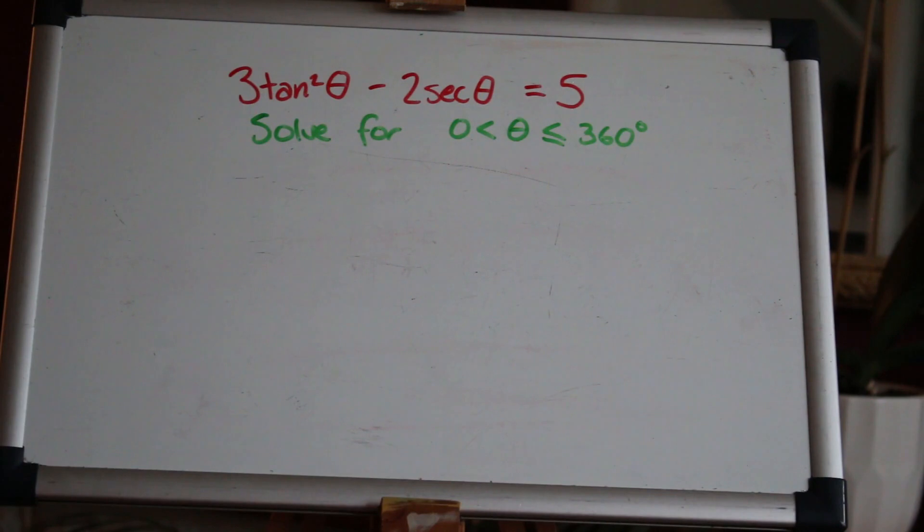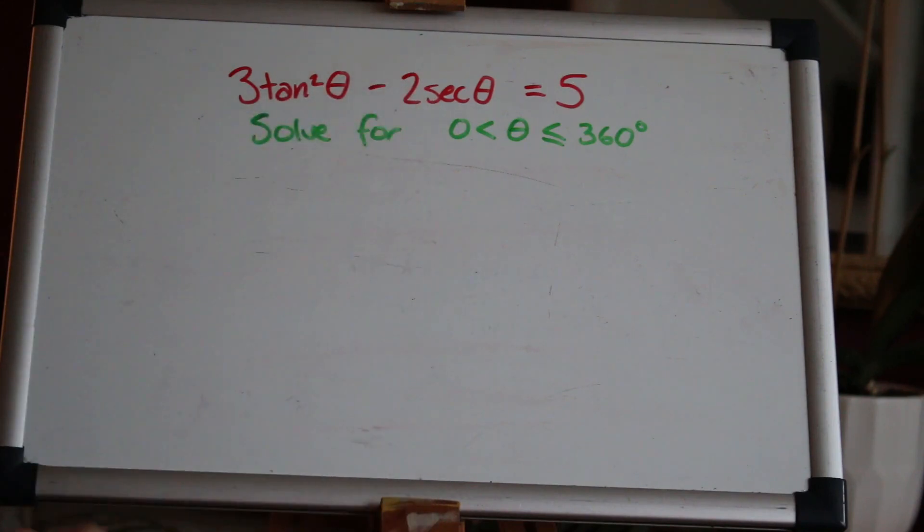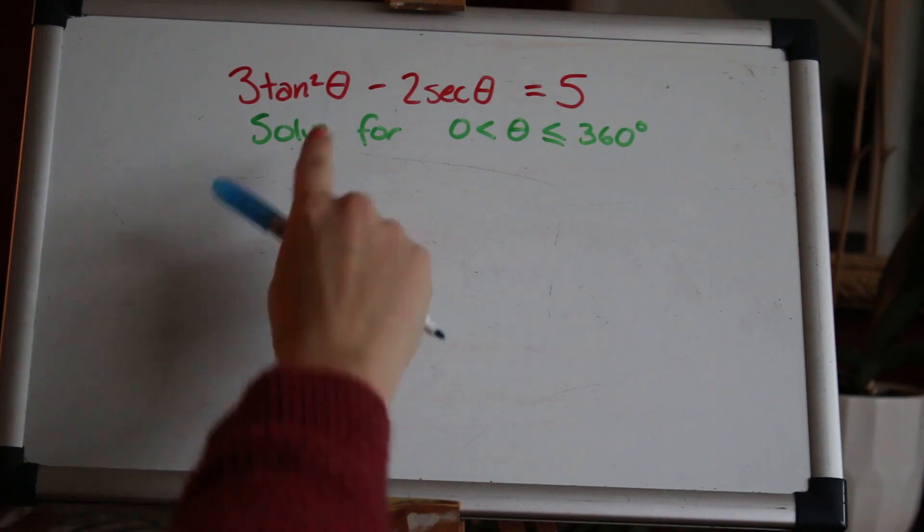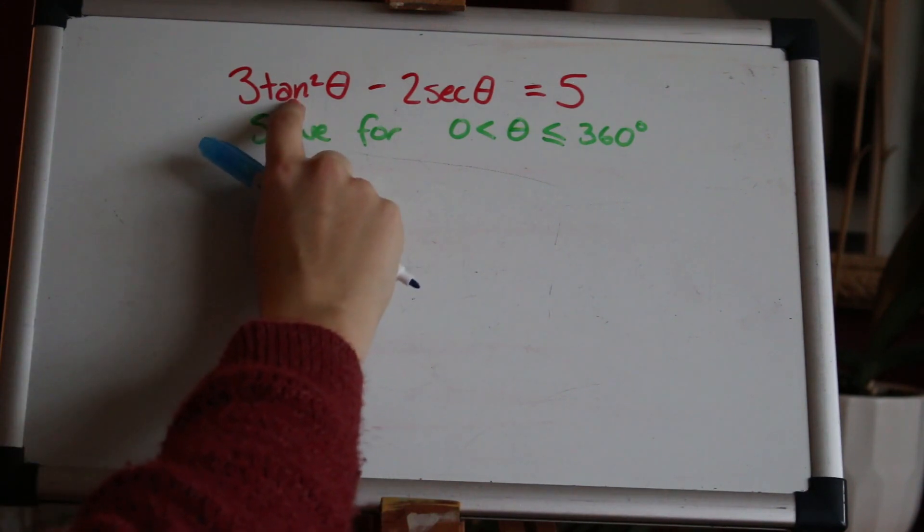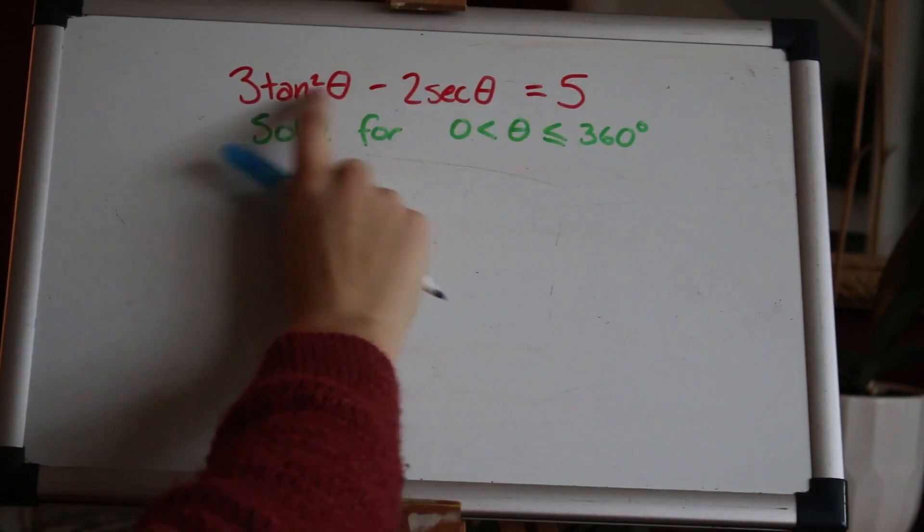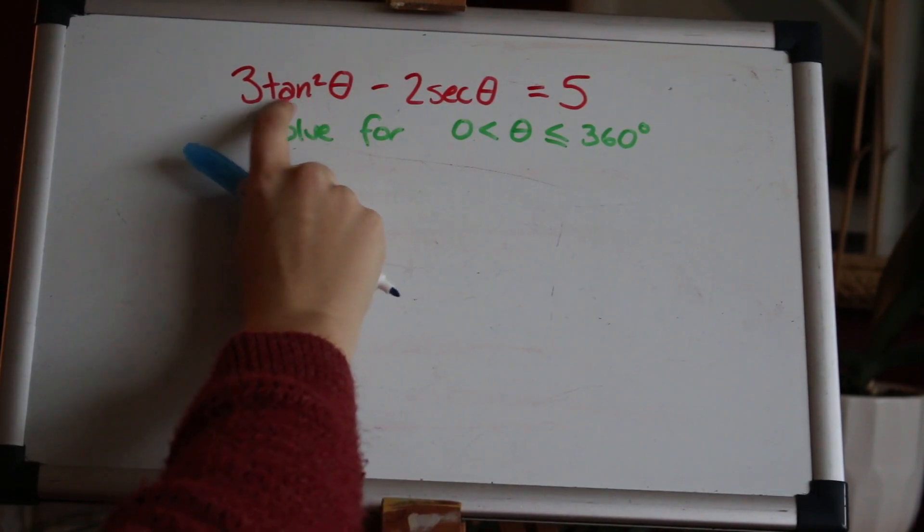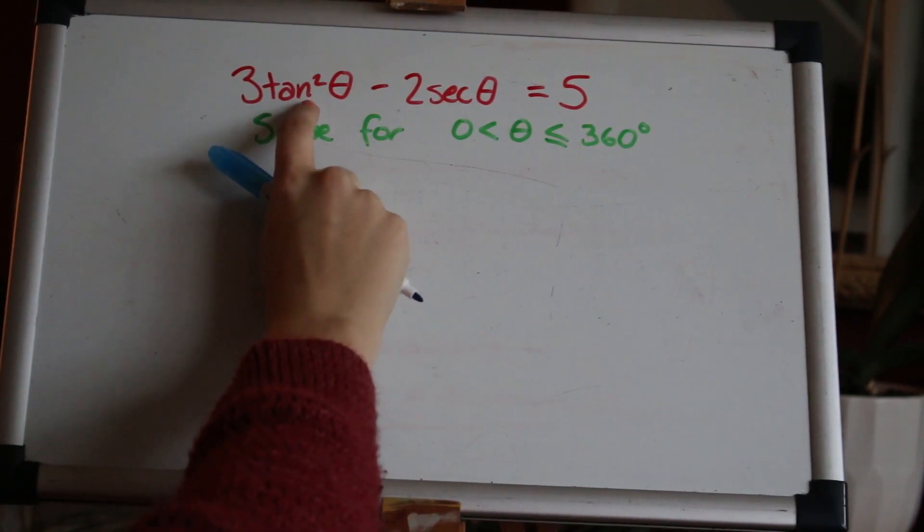Here's our first question and we've been given an equation to solve: 3tan²θ - 2secθ = 5. At the moment we've got a tan and a sec. Now with trig equations the best thing is to convert stuff so it's all the same kind of thing. So this tan² we could turn into sec². So then we've got an equation all just with sec in it and the way to do that is by substituting in using the identity that we know.